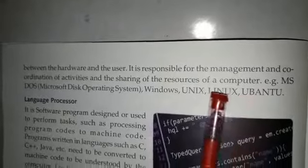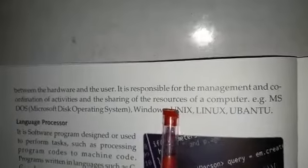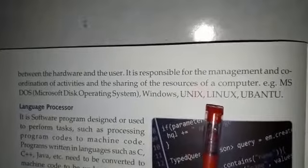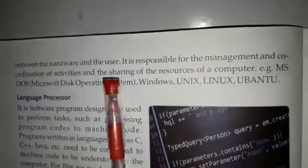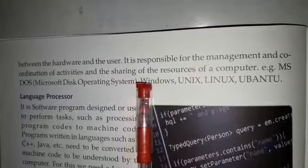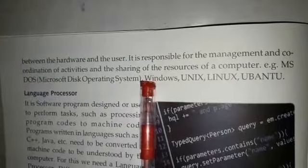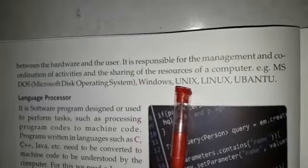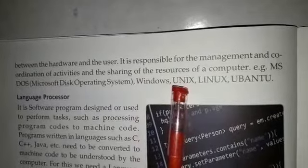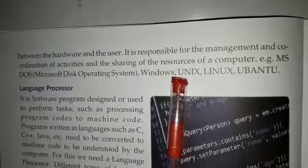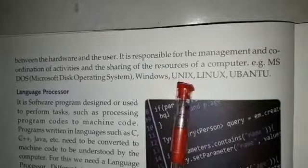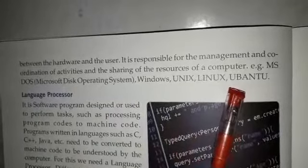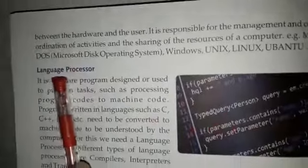जैसा कि नाम से पता चलता है, यह computer system को operate करता है, that is computer को work करने के लायक बनाता है. Operating system, hardware and users के बीच एक interface की तरह है और computer system के सभी work के लिए responsible होता है. For example, Unix, Linux, MS-DOS and Ubuntu. Next is language processor.